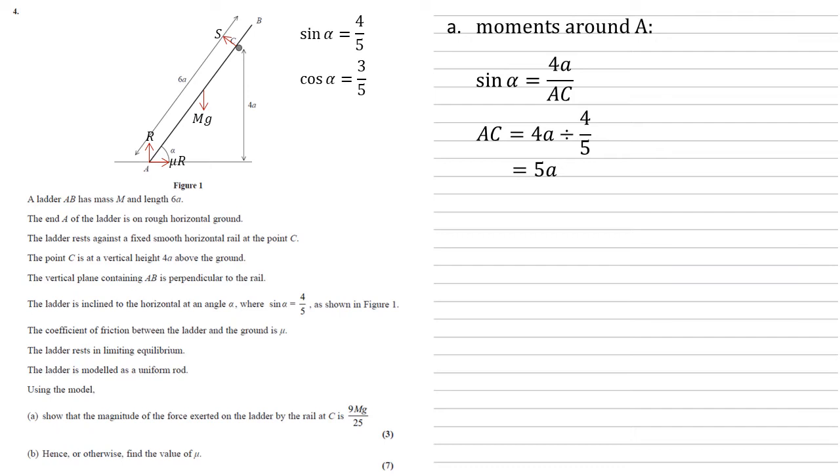Now we've got our distances we can set up our equation with our moments. So anti-clockwise we've got S, it's perpendicular so we don't need any sin or cos and it's at a distance of 5A from A. So that's on the left hand side.